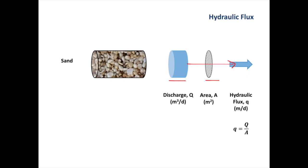Our discharge is measured in units of cubic meters per day, and our area is in meters squared. So if we divide cubic meters per day by meters squared, we end up with meters per day, which is a velocity. The hydraulic flux is also mentioned in the literature under different names — for example, the Darcy flux or the specific discharge — but they all mean the same thing.